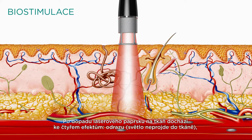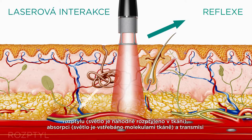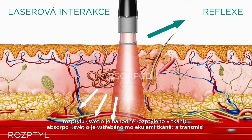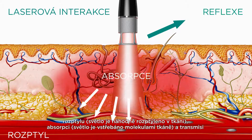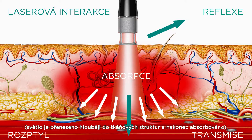Upon application of laser light on human tissue, there are four different effects that occur. Reflection — the light doesn't penetrate the tissue. Scattering — the light is distributed randomly in the tissue. Absorption — the light is absorbed by the molecules of the tissue. And transmission — the light is transferred deeper into the tissue structures, being absorbed eventually.